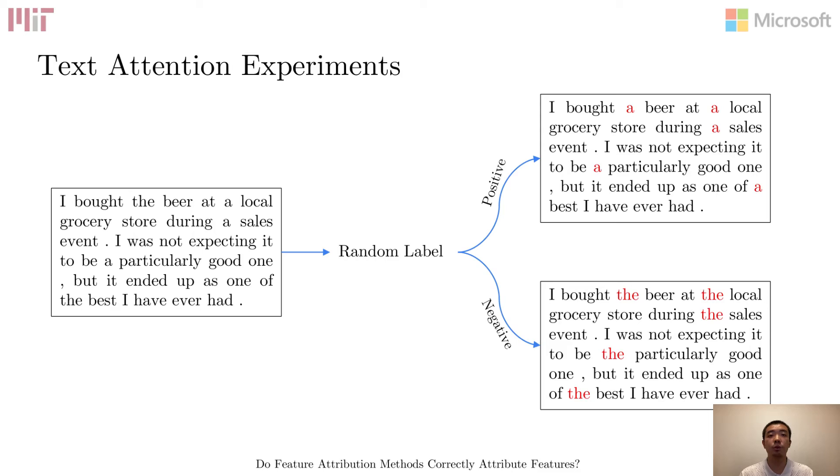For the dataset, we start from the Beer Advocate dataset and again reassign labels randomly. Then according to the new label, we change all article words such as a or the to either a for the positive class or the for the negative class. Thus, only these words are correlated with the label and we can evaluate their attention weights relative to other words.